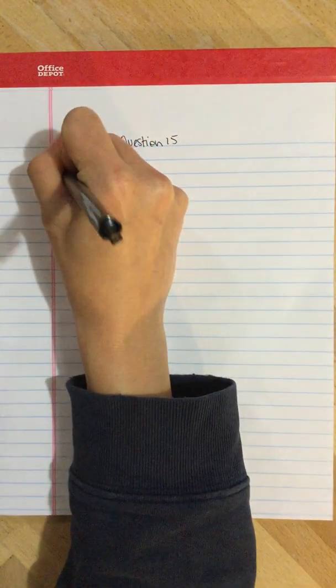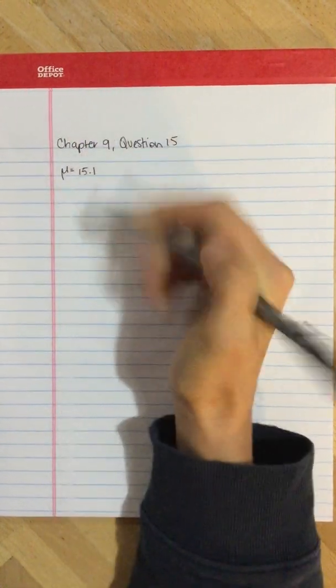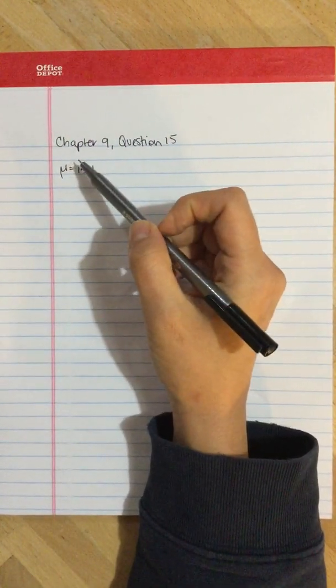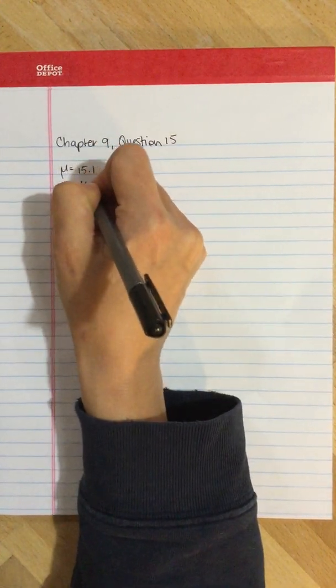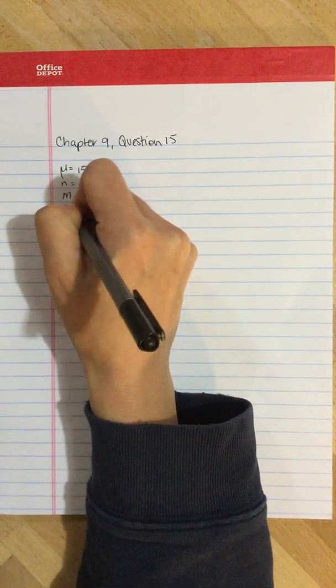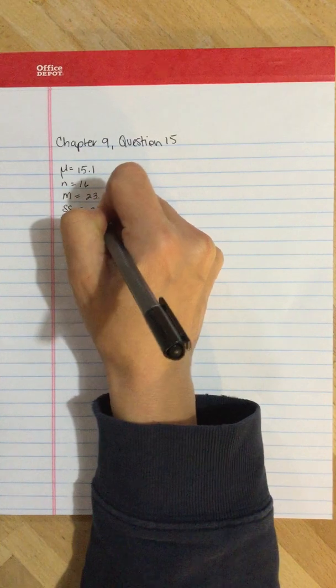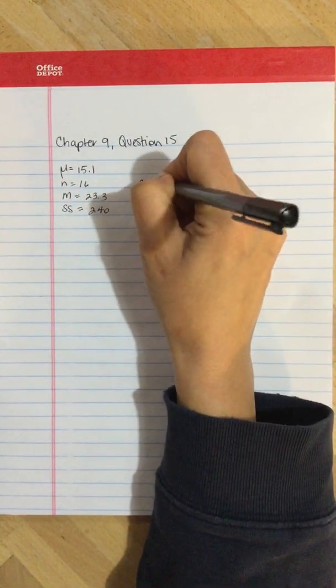So it states that mu equals 15.1, that's the mean from the 1950s. Now we have a sample of n equals 16 with a mean of M equals 23.3 and a sum of squares equal to 240.